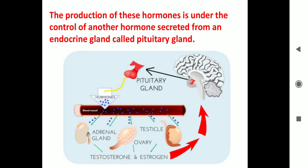The production of all these hormones is under the control of another main hormone secreted from an endocrine gland called the pituitary gland. You can see in the brain — the lower part of the brain has a P-shaped gland, and it is called the pituitary gland, which releases hormones directly into the blood vessels as you can see, and these move to the different organs.